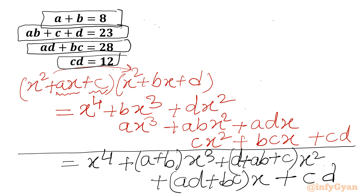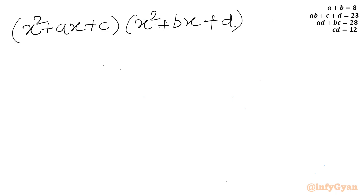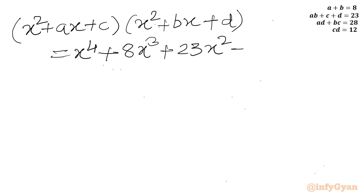Let us apply all the values. So I can write x squared plus ax plus c times x squared plus bx plus d equals x to the power 4 plus 8x cubed plus 23x squared plus 28x plus 12. Now I will equate this with 0 and solve for x.